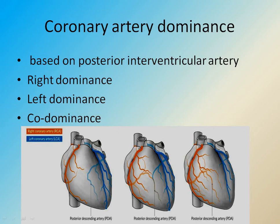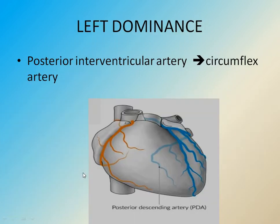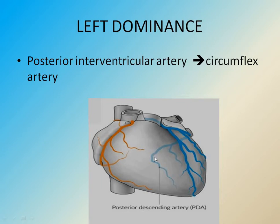Coronary dominance is based on the posterior interventricular artery. It is divided into right dominant, left dominant, and co-dominant. In a right dominant heart, the posterior interventricular artery is supplied by the right coronary artery. If supplied by the left coronary artery, it is called left dominant. Co-dominant means the posterior interventricular artery is supplied by both right and left coronary arteries.